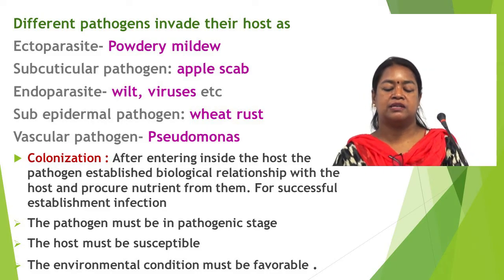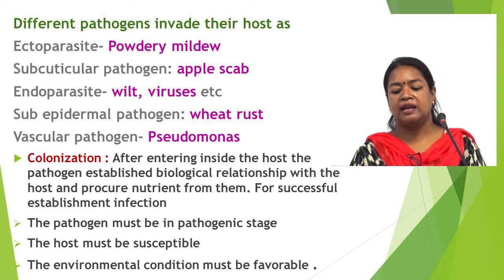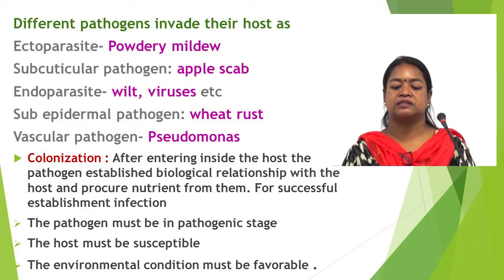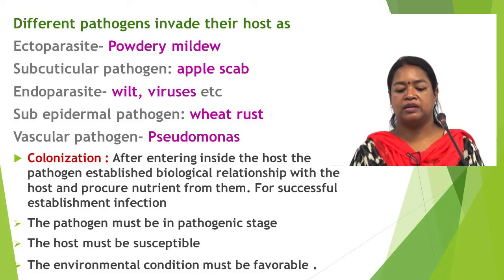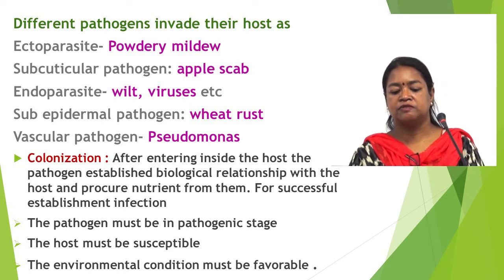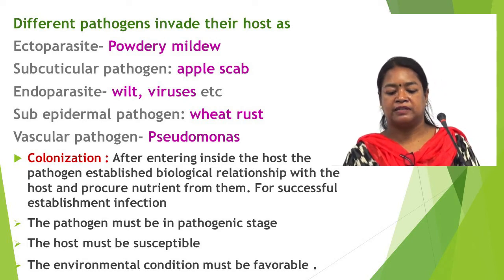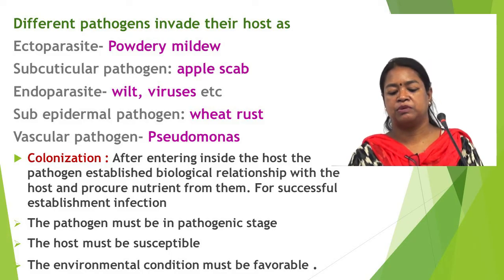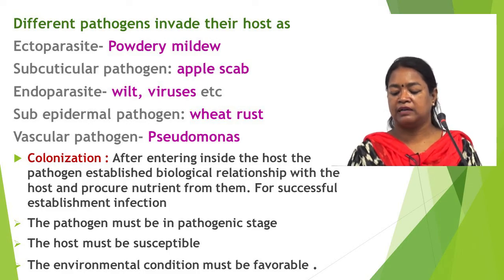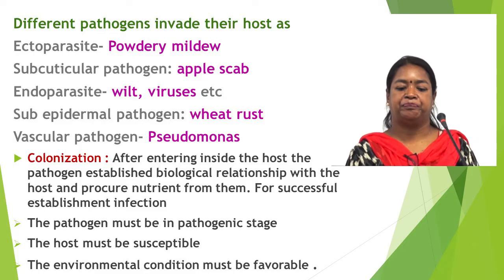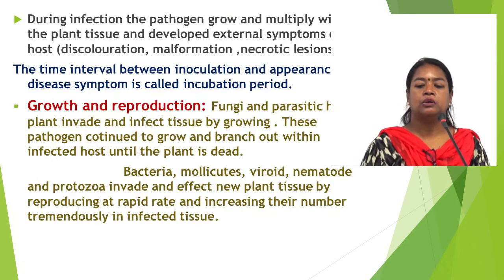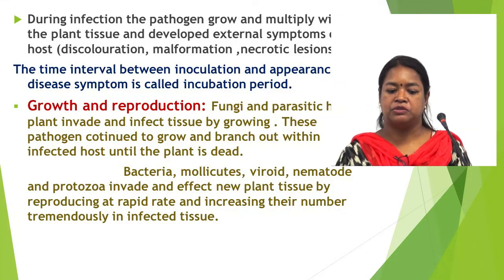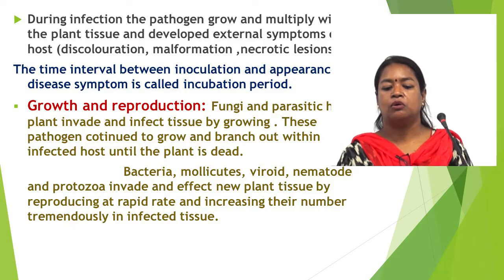The next event is colonization. After entering inside the host, the pathogen establishes a biological relationship with the host and procures nutrients from them. For successful establishment of infection, the pathogen must be in the pathogenic state, the host must be in a susceptible stage, and the environmental conditions must be favorable. During infection, the pathogen grows and multiplies within the plant tissue and develops external symptoms on the host.